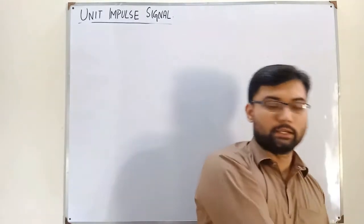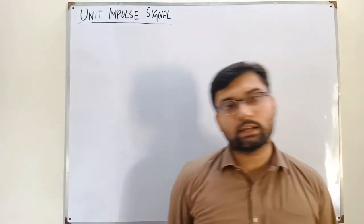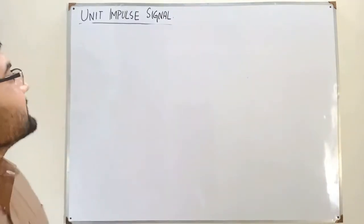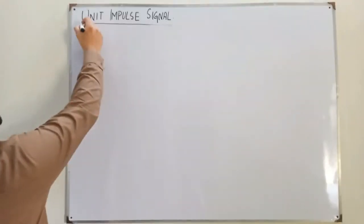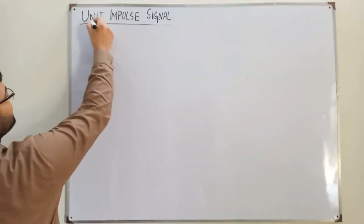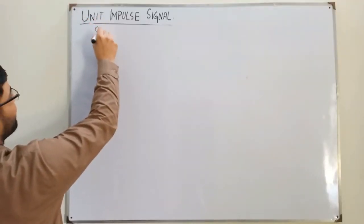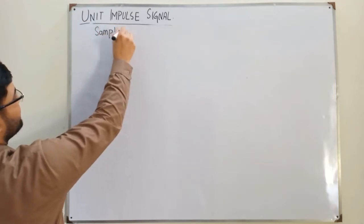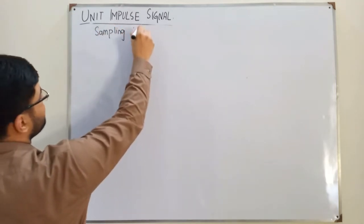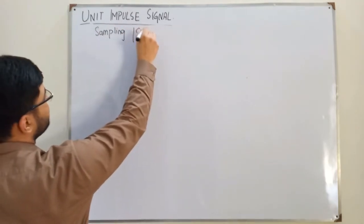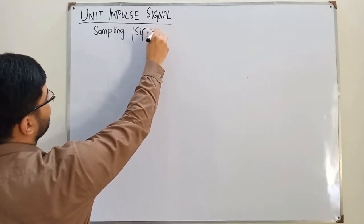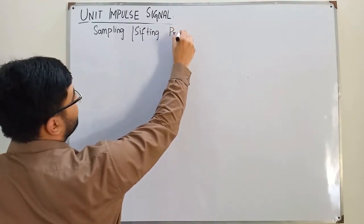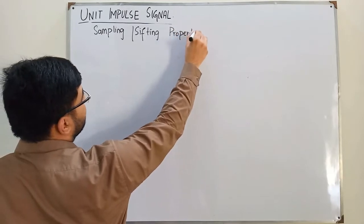Bismillahirrahmanirrahim, assalamu alaikum. Continuing the topic of the impulse signal, today we look at the sampling property, also called the shifting property of the impulse signal.